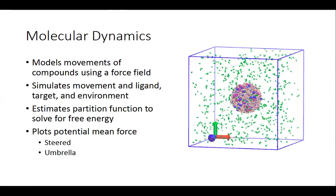Molecular dynamics basically models the movement of different compounds — usually your ligand and its binding target — using a variety of force fields. It simulates the ligand moving away from or into your binding site and the surrounding environment, usually in some sort of cubic cell. It estimates the partition function to solve for free energy and plots mean force, usually in one of two ways: the steered method or the umbrella sampling method.